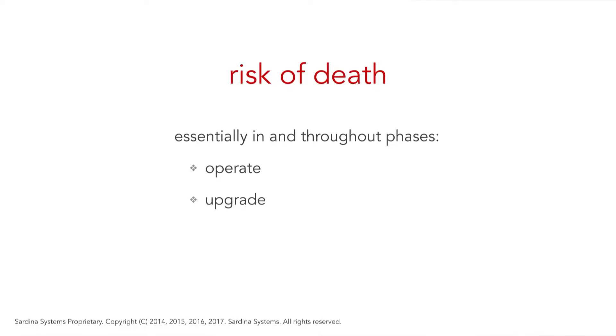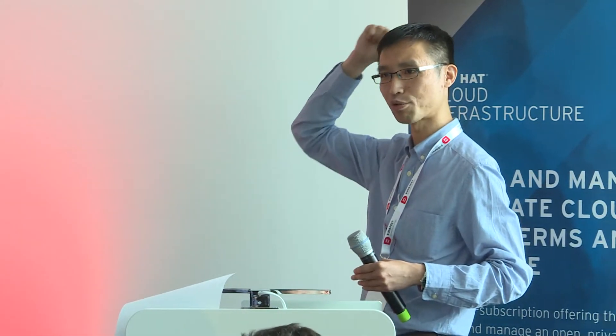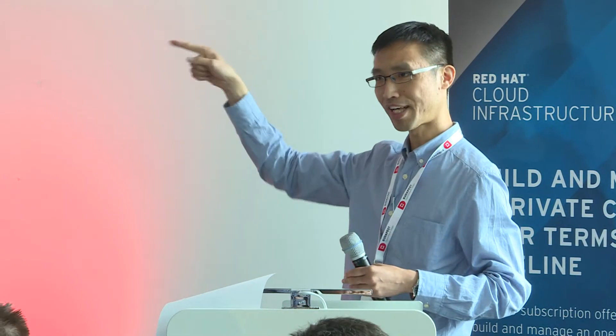Looking back in totality, the risk of death is essentially throughout the phases of operate and upgrade. The death during the upgrade phase is straightforward: if you want zero downtime upgrade, the solution architecture you implemented way back in the deploy phase must meet that requirement. This is one of those situations where if you mess up in solution architecture during the deploy phase, that's when it's going to bite you.